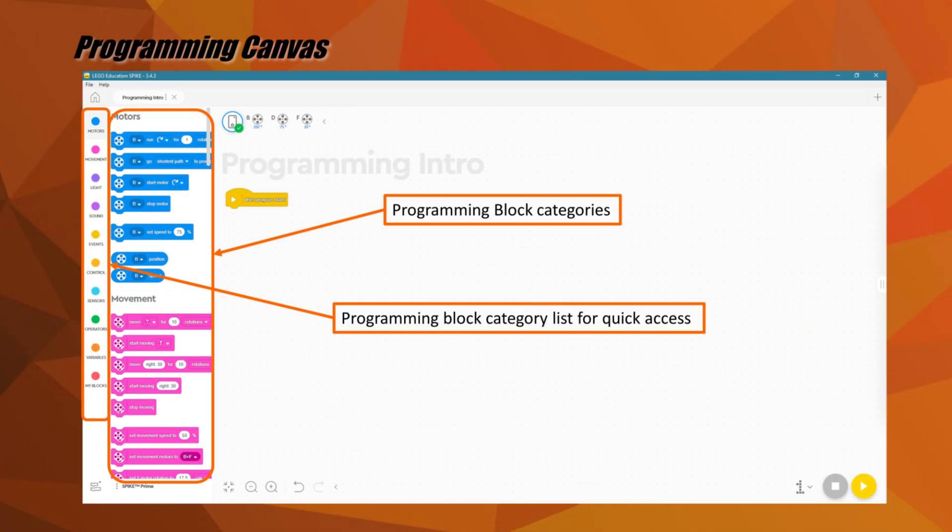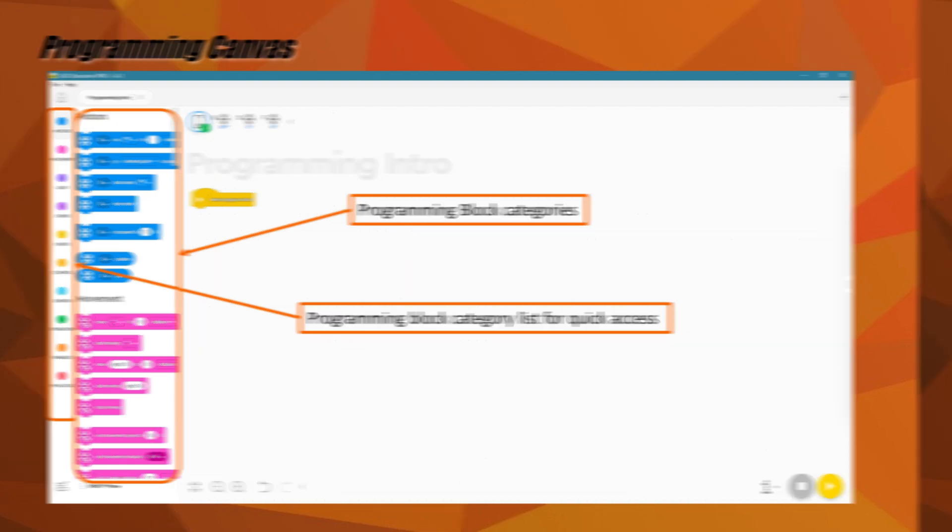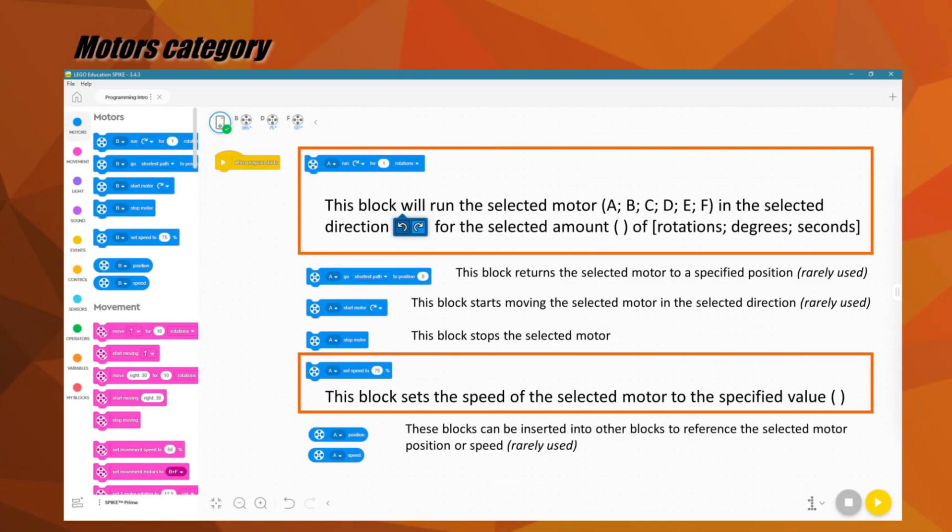Word blocks uses 10 different programming block categories. Along the left side of the programming canvas, you have a quick access bar. Click on one of the colored dots representing the different categories to view the different blocks available within that category. The darker blue category is the motors category. Some blocks are more useful than others.